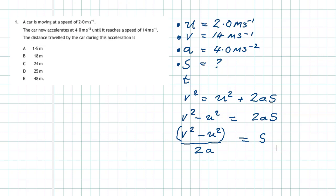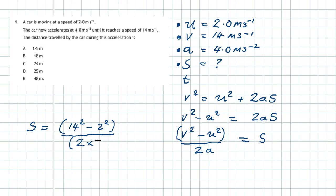Now it's time to plug in the numbers. Displacement s equals bracket 14 squared minus 2 squared, close bracket, divided by 2 times 4. Doing the calculation, we get an answer of 24 meters. That's displacement so it's measured in meters, which corresponds to answer C in the multiple choice.